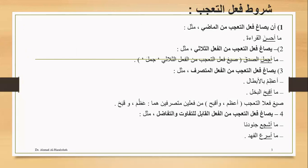Now the conditions for the verb of exclamation — شروط فعل التعجب: First, the verb of exclamation must be derived from a past tense verb. For example: ما أحسن القراءة. Second, it must be derived from a triliteral verb. For example: ما أجمل الصدقة — the exclamation verb أجمل is from the triliteral root جمل.